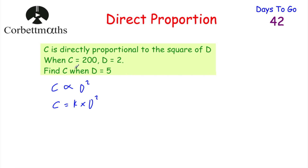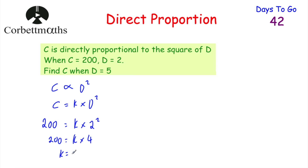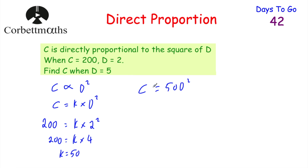Let's substitute those values in. C, which is 200, is equal to K multiplied by D squared. Now D is equal to 2, so it's going to be 2 squared. 2 squared is 4, so we get 200 is equal to K multiplied by 4. If we divide both sides by 4, we get K is equal to 50. So we can substitute K equals 50 back in to get C is equal to 50 multiplied by D squared, or C equals 50D squared. That's our formula linking C and D.